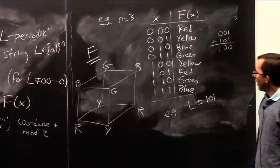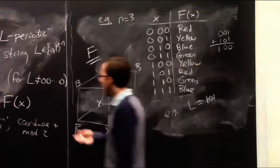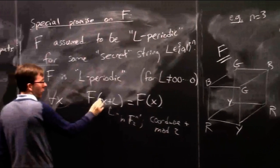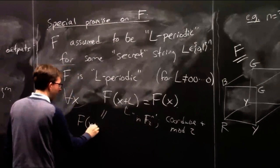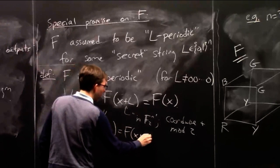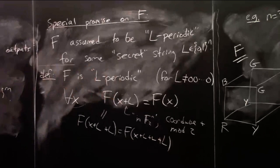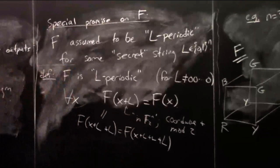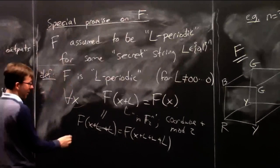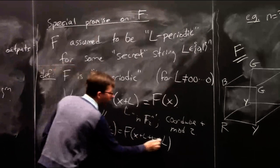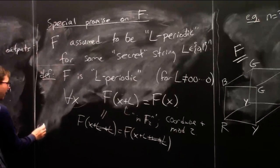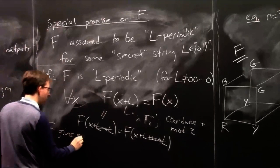Normally in periodic functions you'd think this implies a lot of repetition, because the condition holds for all x, which means it also holds for x plus L plus L, and x plus L plus L plus L, and so on. But since we're working in F_2^n with coordinate-wise mod 2 addition, 2L is just 0 — it cancels. So in this setting, periodicity imposes much less repetition than you might think. It only enforces that f gives the same color to all x and x plus L pairs.